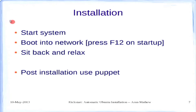Once the deployment server is set up, you connect the new machine to the network, turn it on, and press F12 to boot into the network — it will automatically start installation. You can sit back and relax. Do this on as many machines as you want and it will install all of them in parallel without any manual intervention.